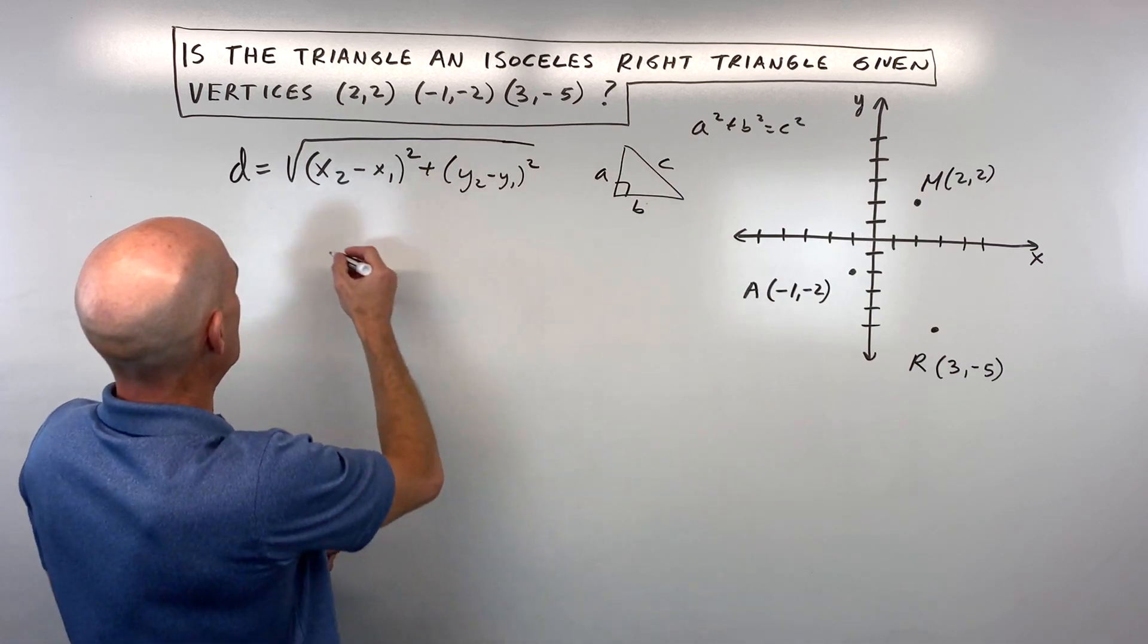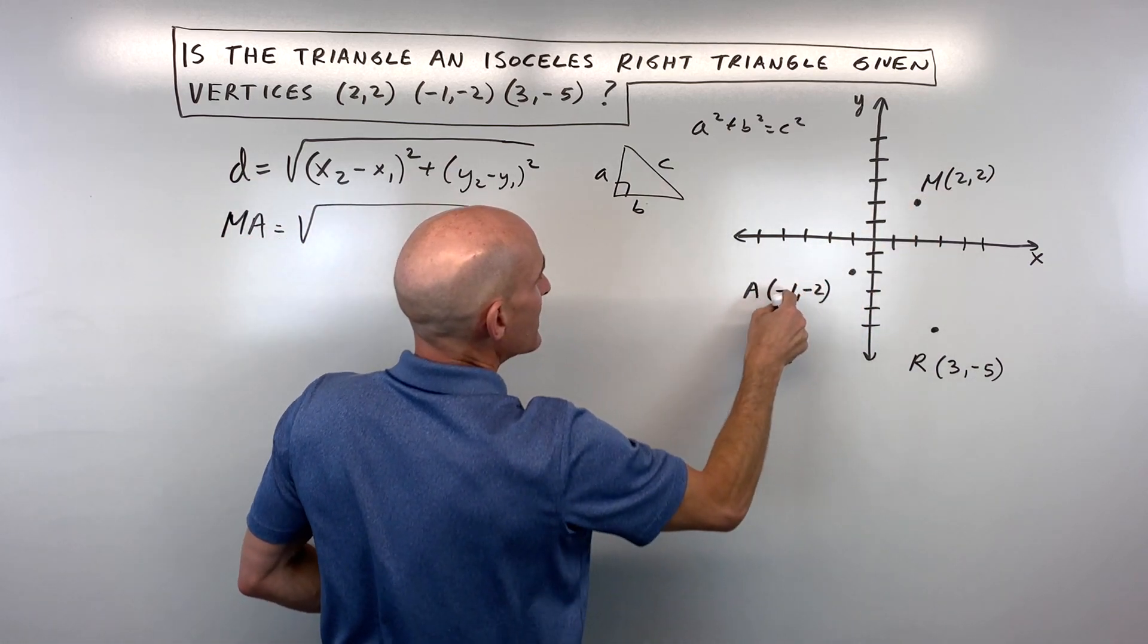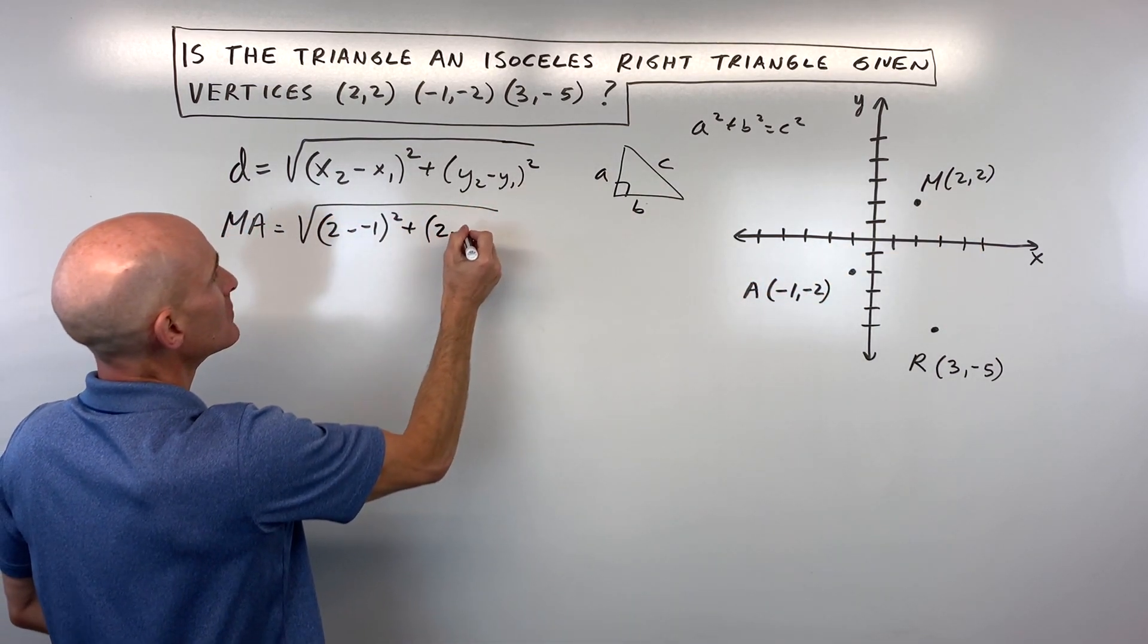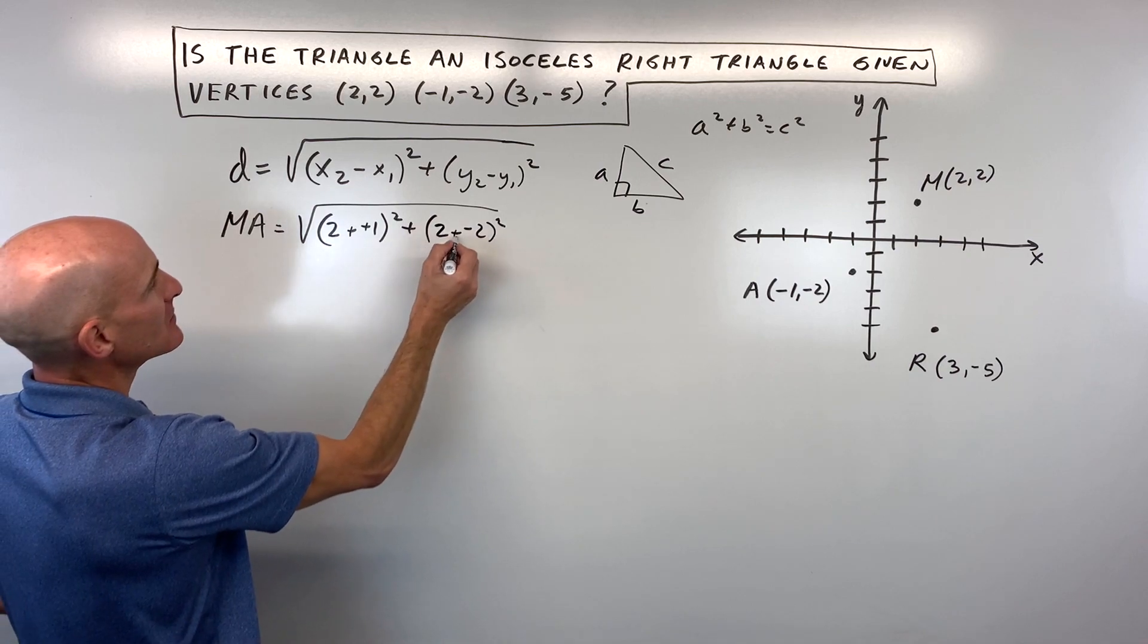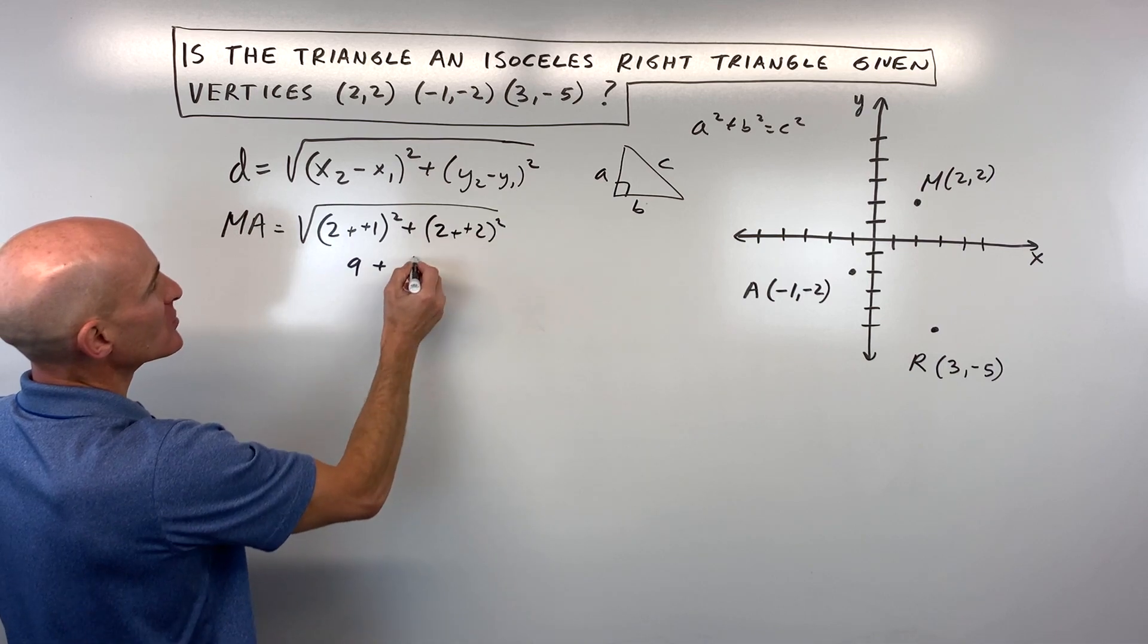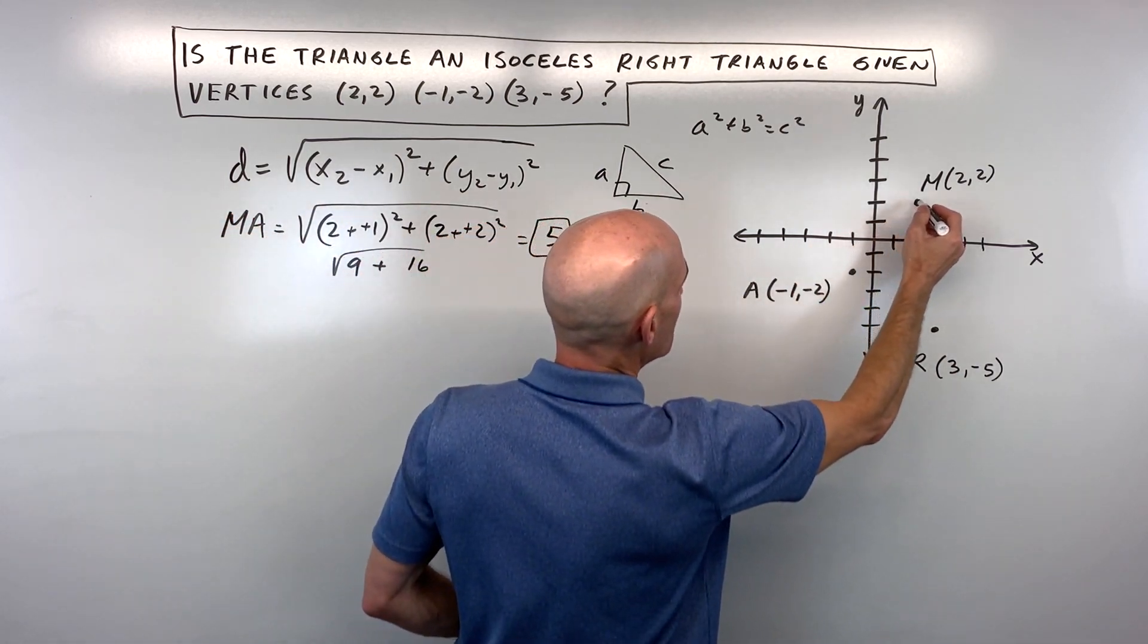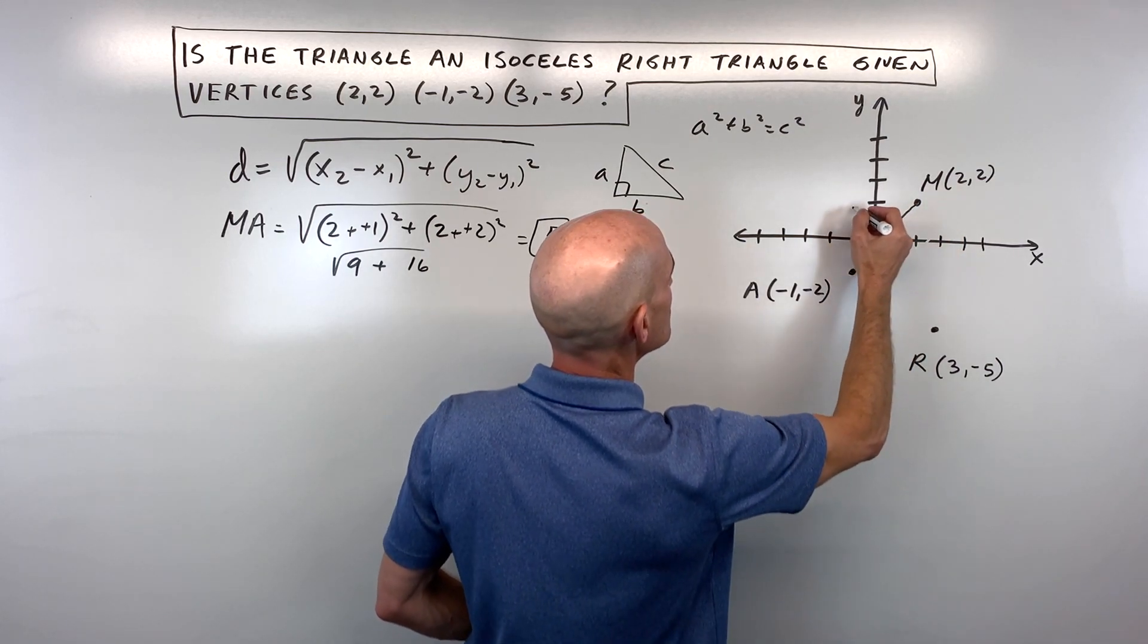Let's go ahead and start off by finding the distance from M to A, so I'm just going to call that MA. It's the square root of (2 - (-1))² + (2 - (-2))². When you subtract, it's like adding the opposite, so we have 3² which is 9, and 4² which is 16. This is 25, and the square root of 25 equals 5. So that's the length of MA right here, so let's sketch this in, roughly something like this, and we say this is 5.